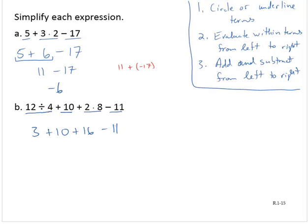And now, I'll work from left to right. 3 plus 10, that's 13, plus 16 minus 11. From left to right, 13 plus 16, that's 29 minus 11. And 29 minus 11 is 18.